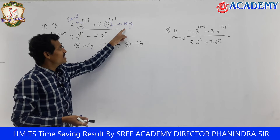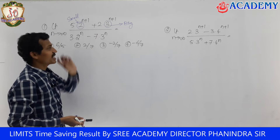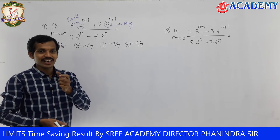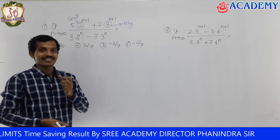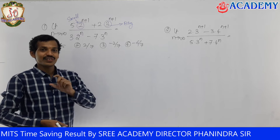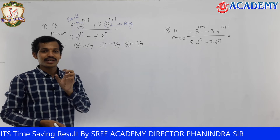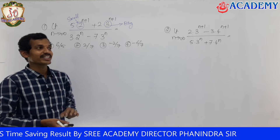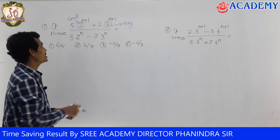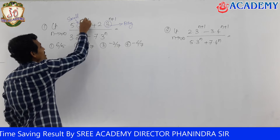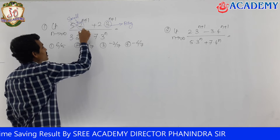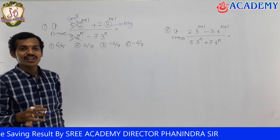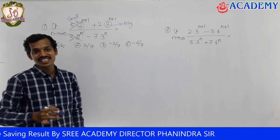To remember this trick: the bigger base is the 'big boss' — like Chiranjeevi — and the smaller base is the 'small boss' — like Pawan Kalyan. When both exist together, the big boss dominates. So we eliminate the small value terms, because wherever the big boss is present, the small boss's contribution becomes negligible.